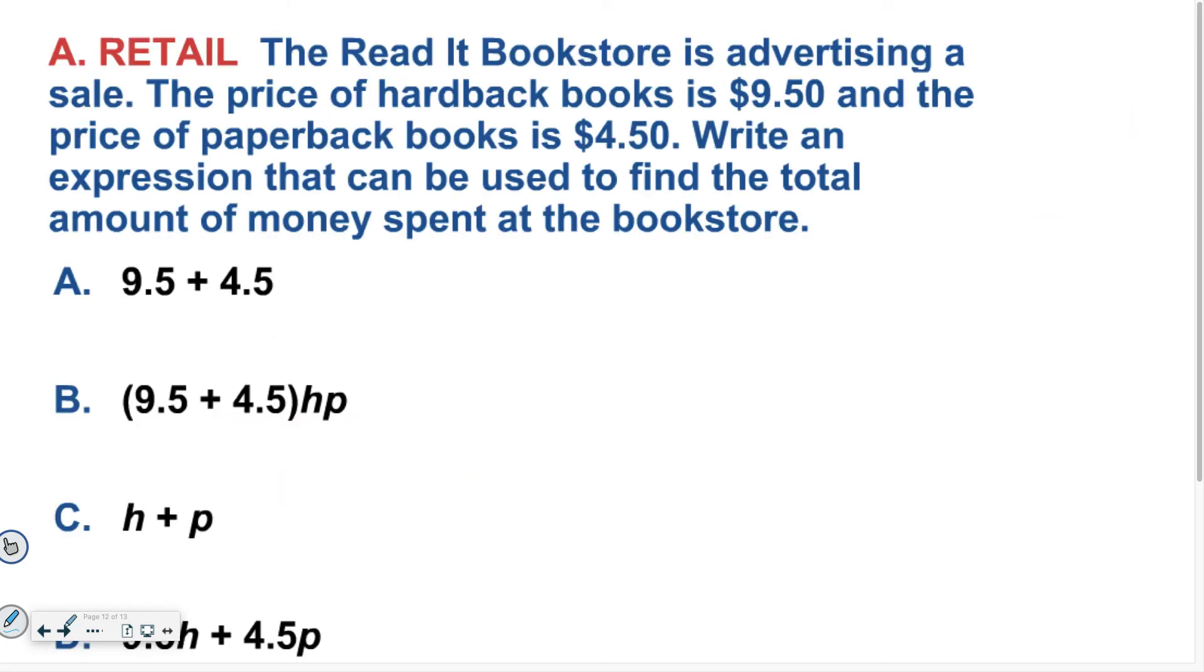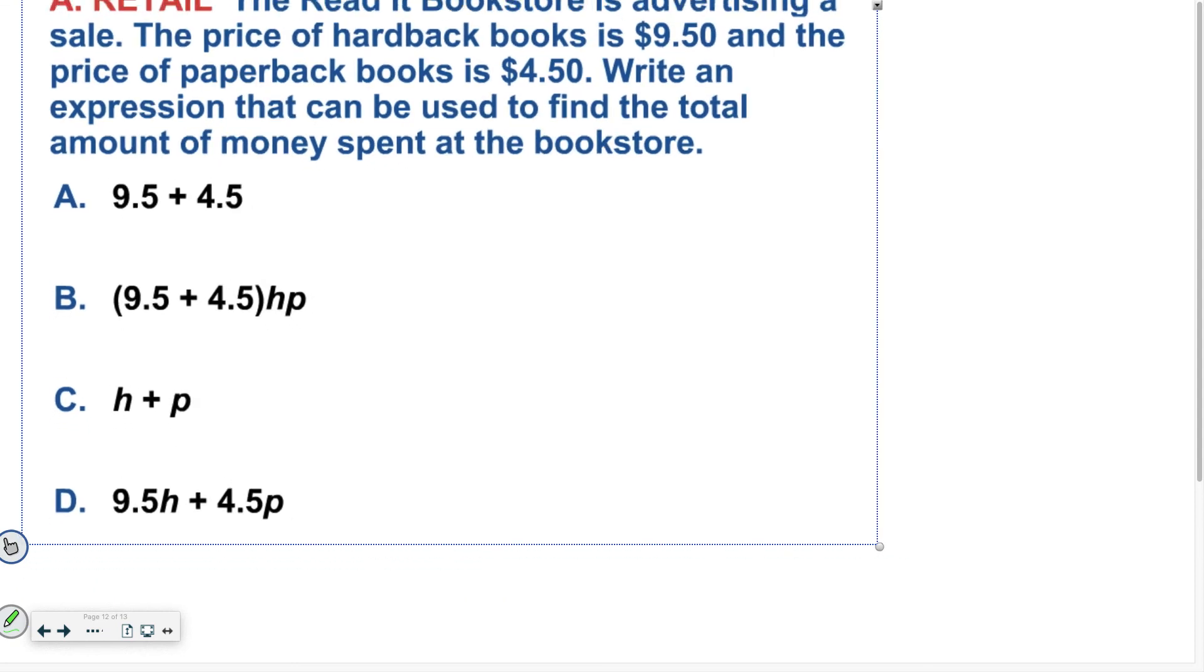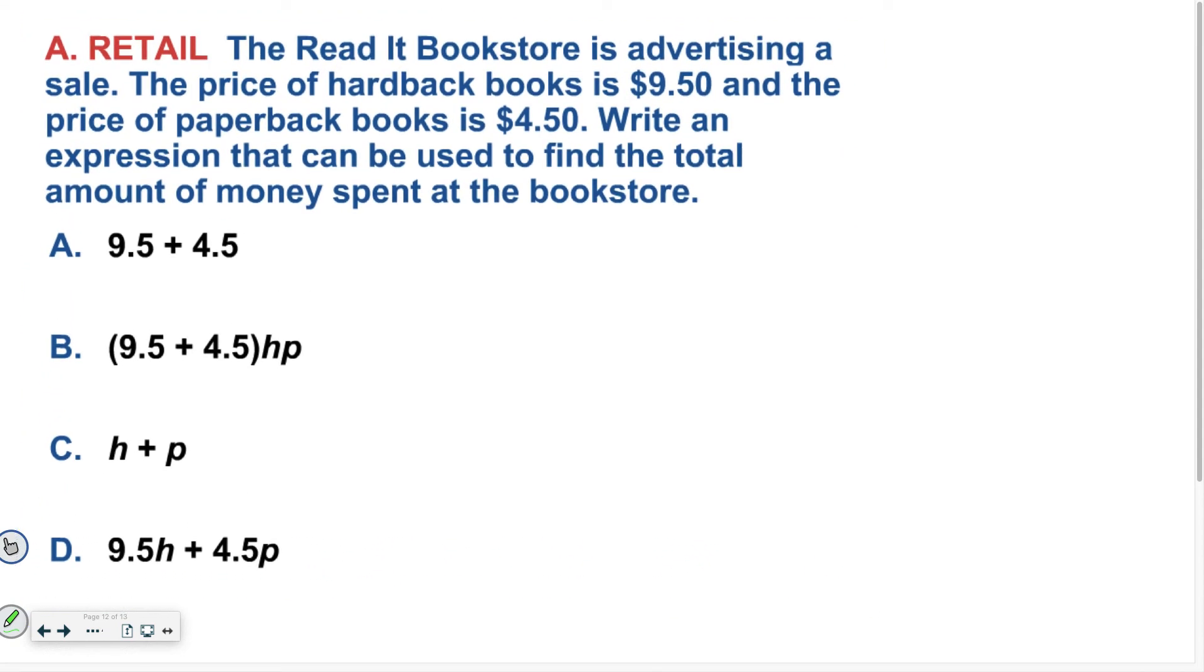Okay, now you're going to try a problem like that. So we have the Read It Bookstore is advertising a sale. The price of a hardback book is $9.50. So practice underlining. And the price of a paperback book is $4.50. Write an expression that can be used to find the total amount of money spent at the bookstore. So this is just like the play example we just did. So go ahead and try this. Good luck.